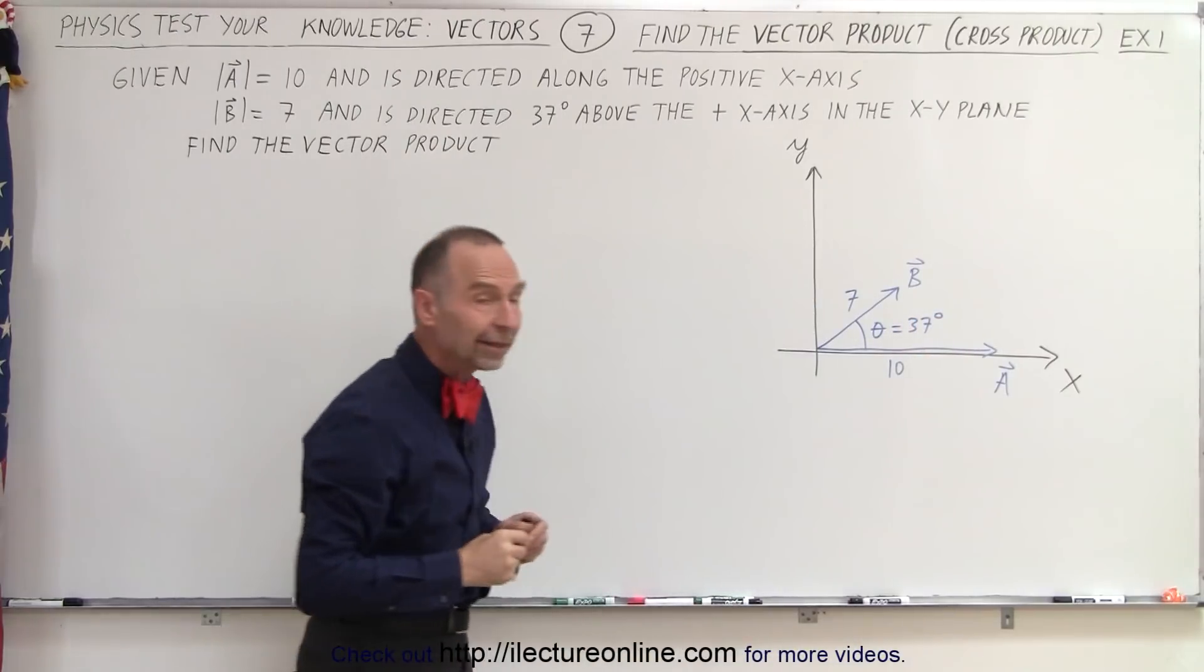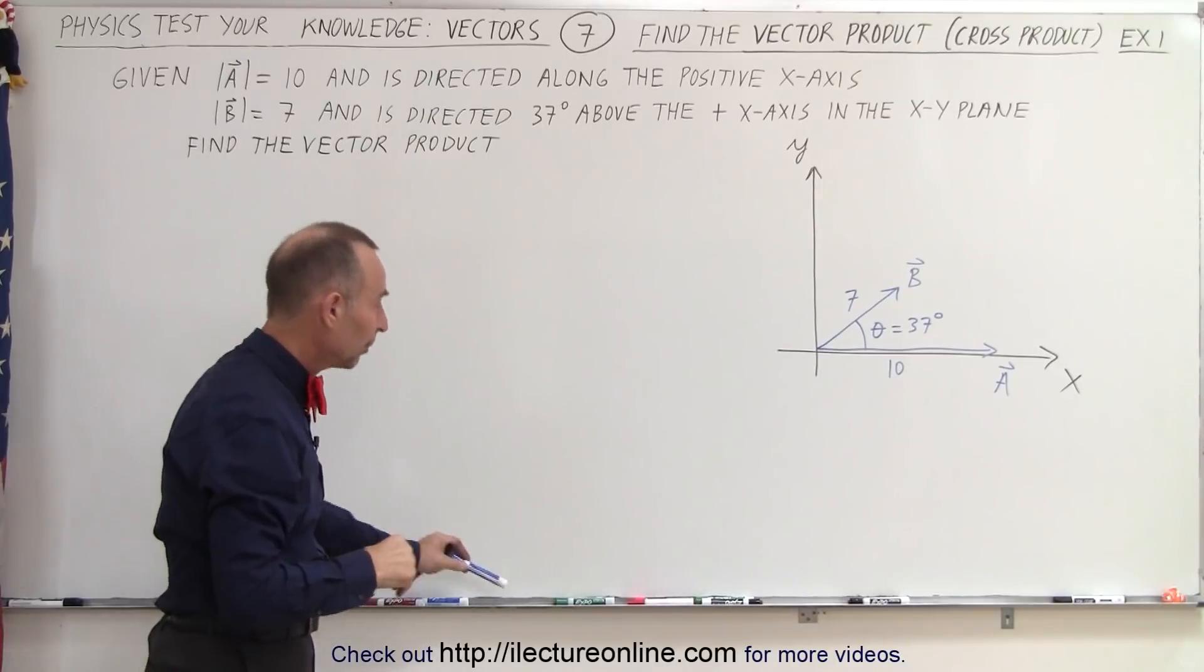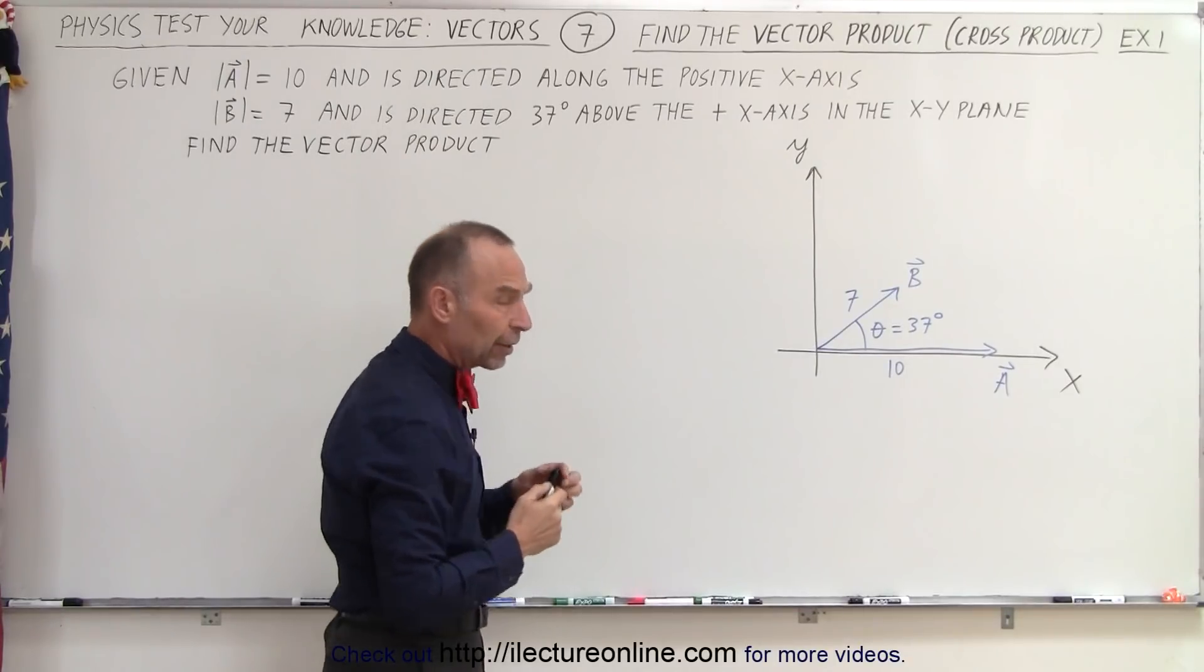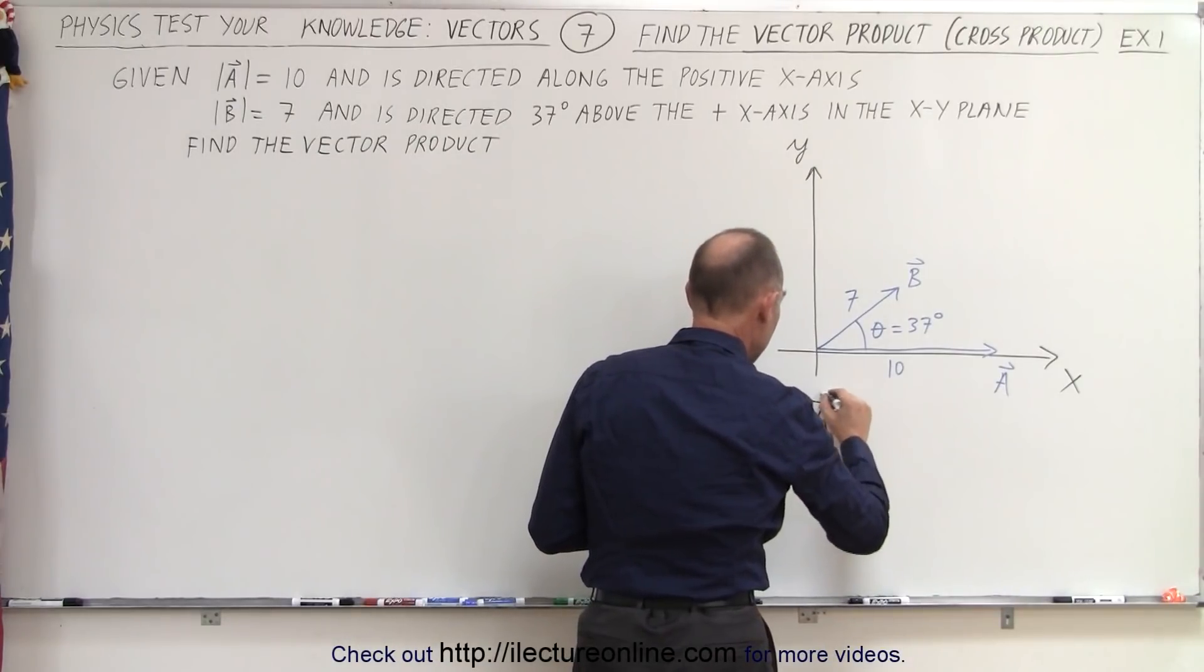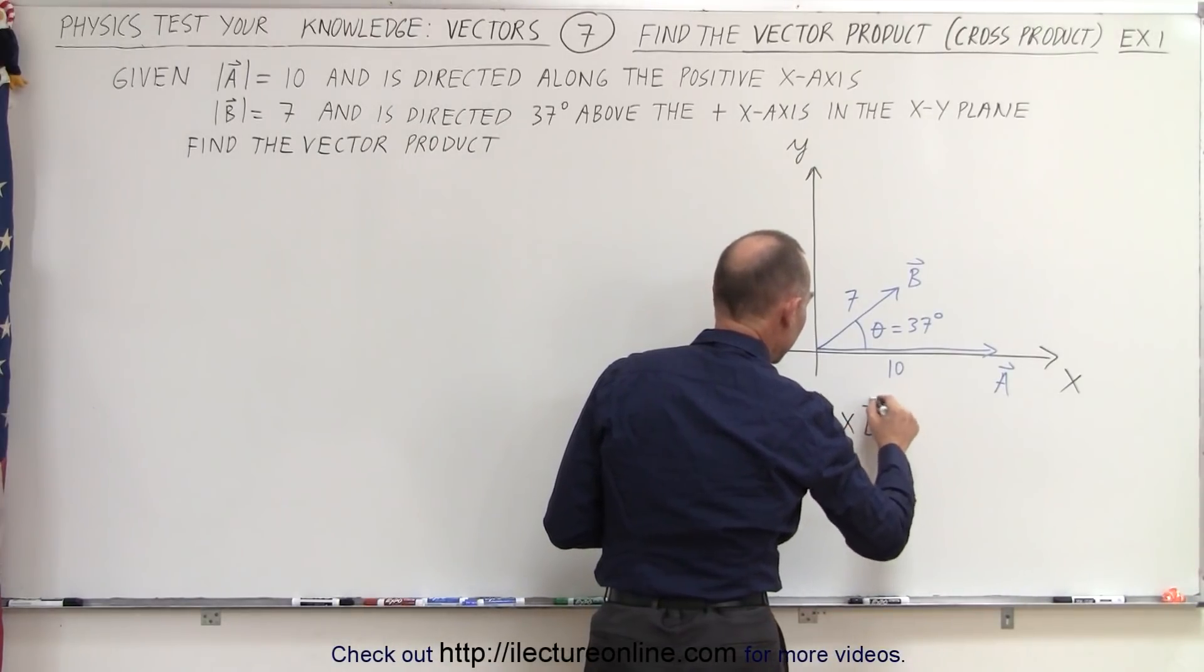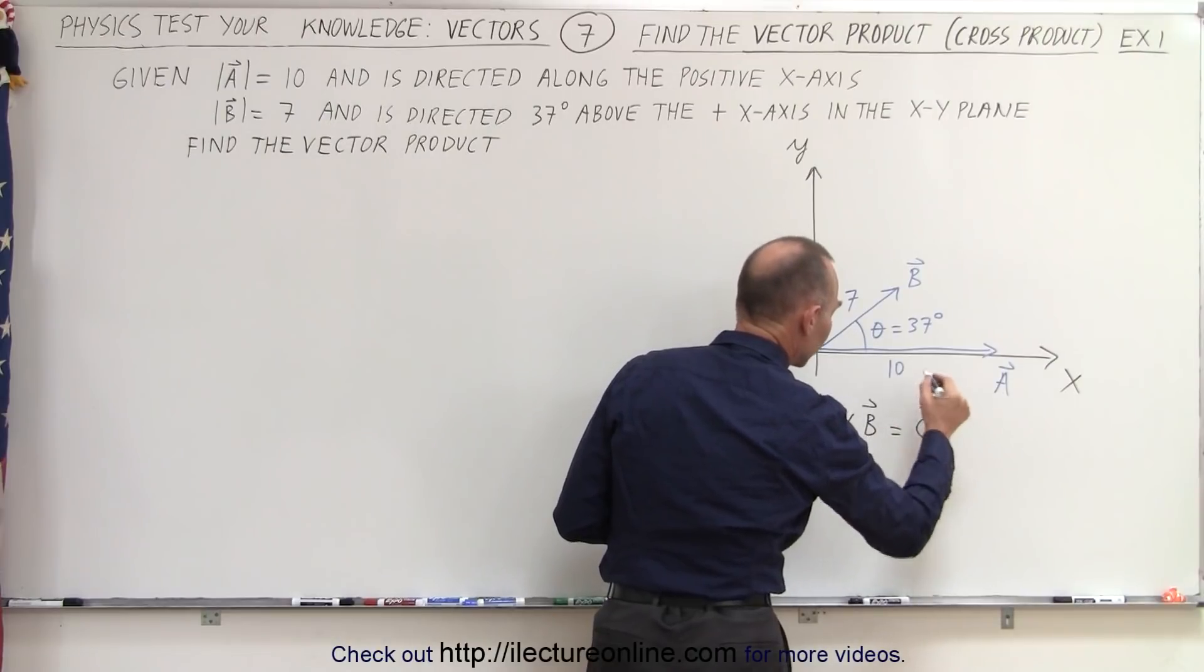Now we're supposed to find the cross product or vector product. To find the cross product, we write that A cross B will therefore be another vector, let's call that vector C.